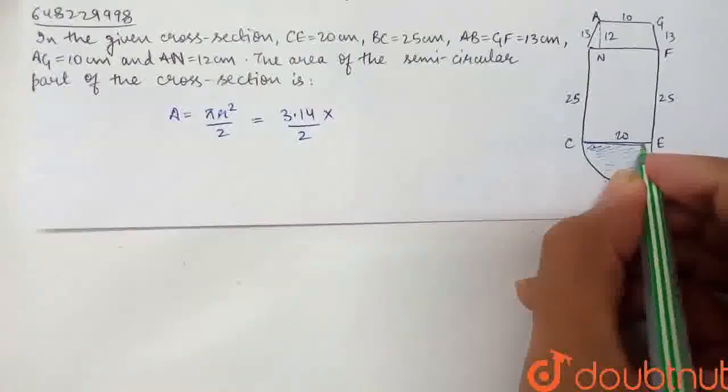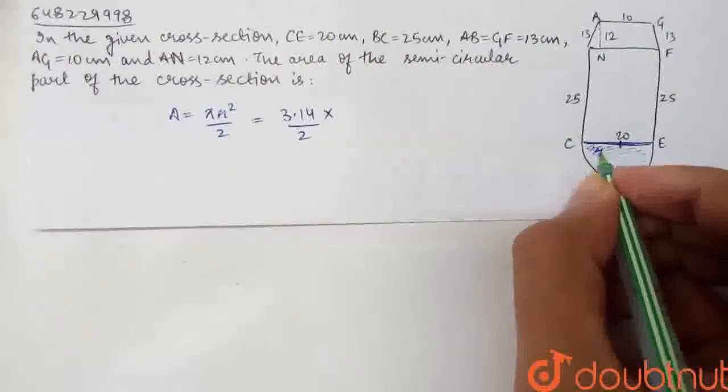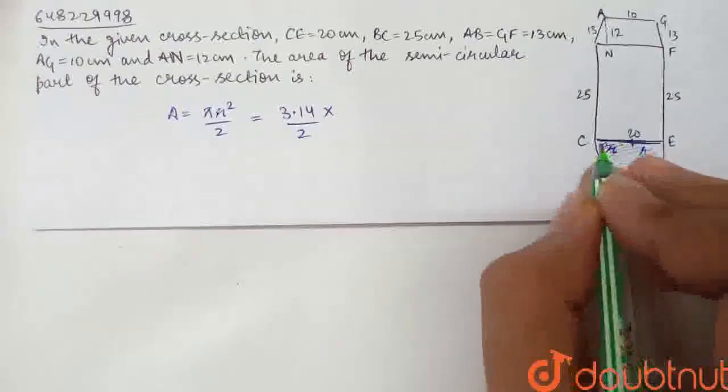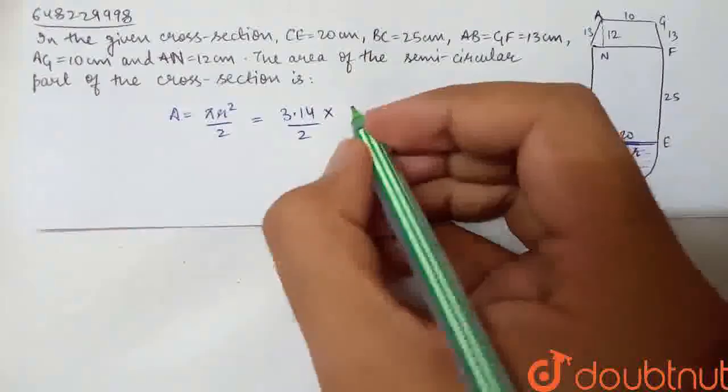Now, the radius of the semicircular part - if we divide it, this will be a radius and this will be a radius. This is the diameter. So 2r equals 20, therefore r equals 10 cm.